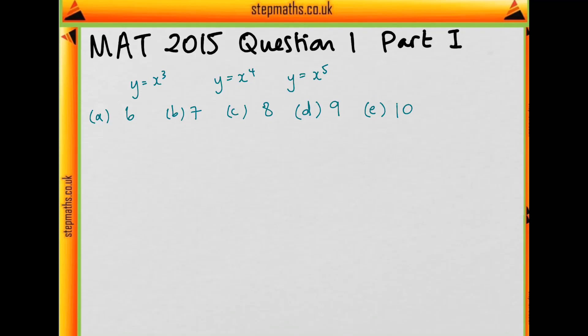Hi, so I'm going to go through Part 1 of Question 1 on MAT 2015. It asks us how many regions the plane is split up in when we graph these three functions, and we're not considering the x and y axes here. Is it 6, 7, 8, 9, or 10?